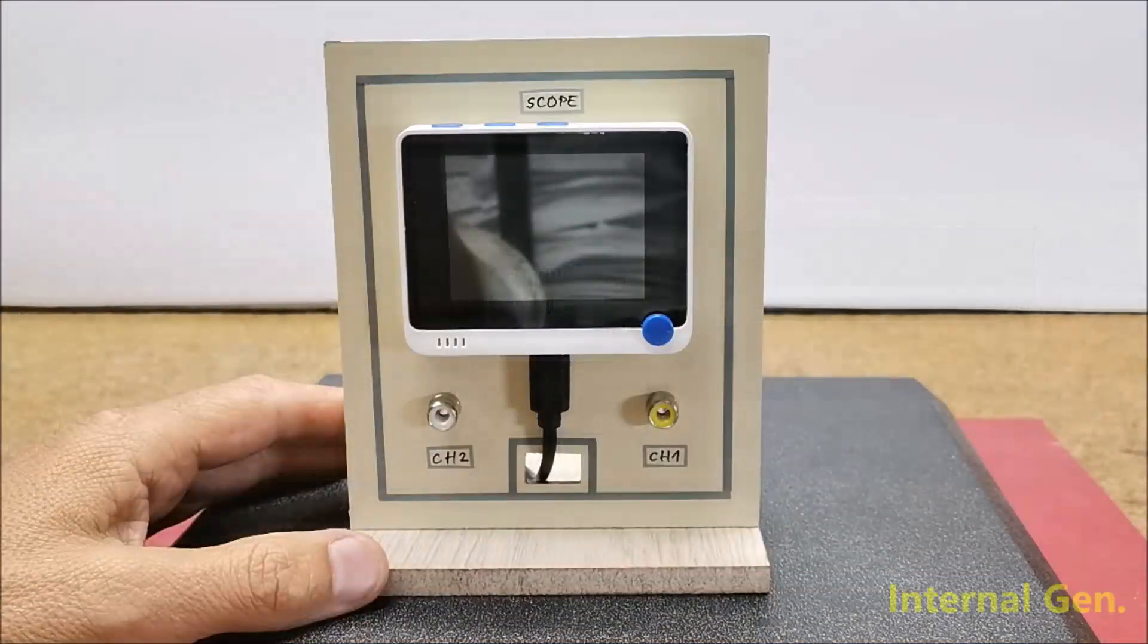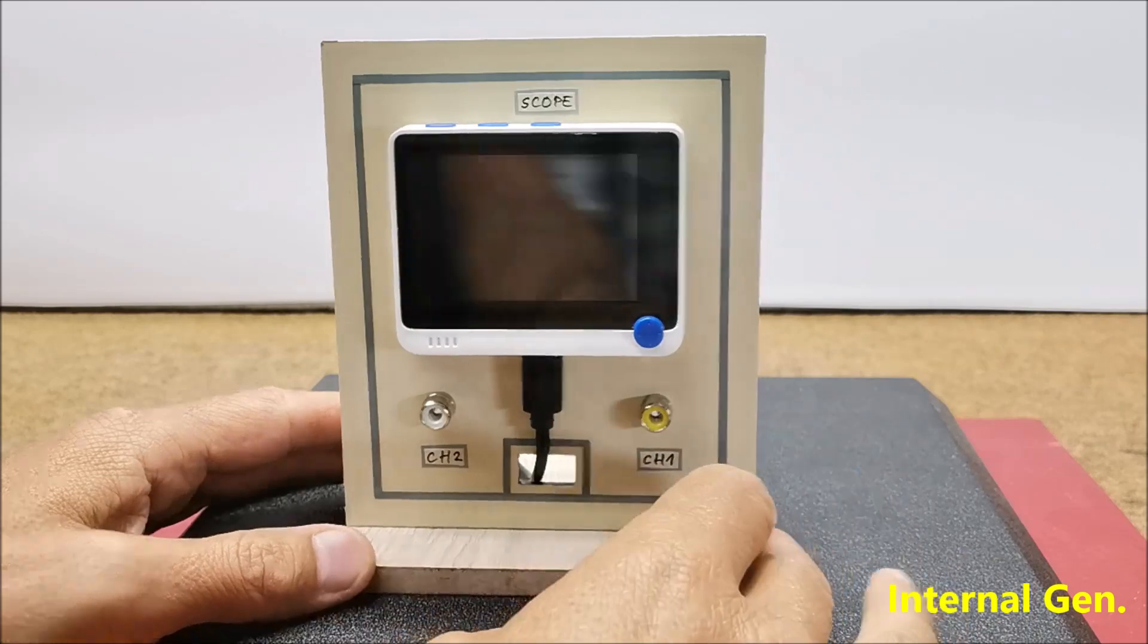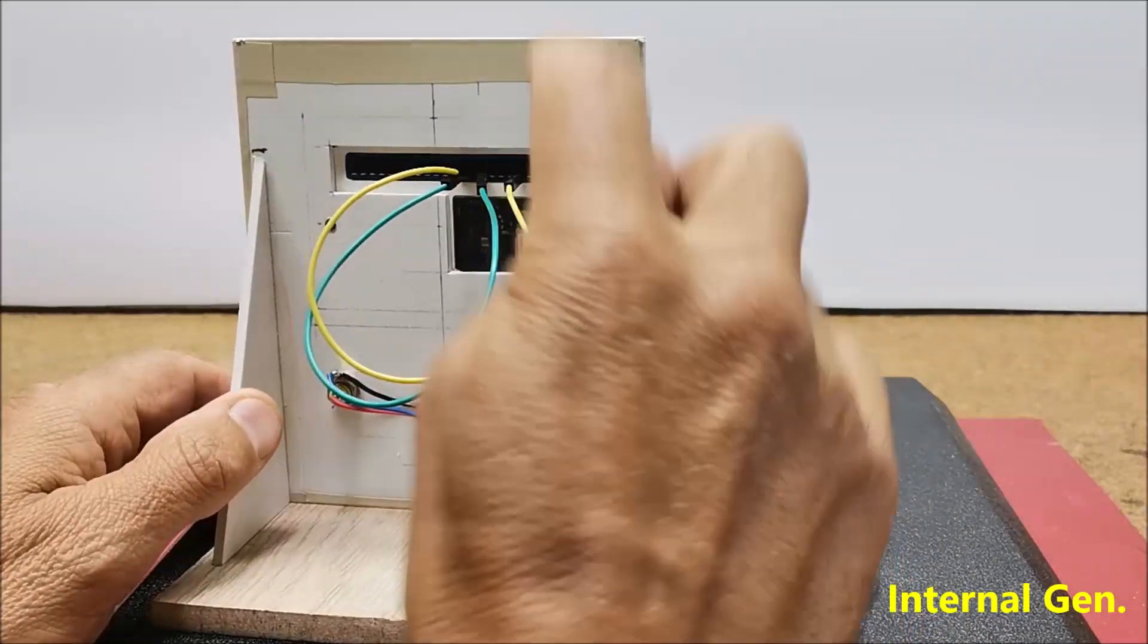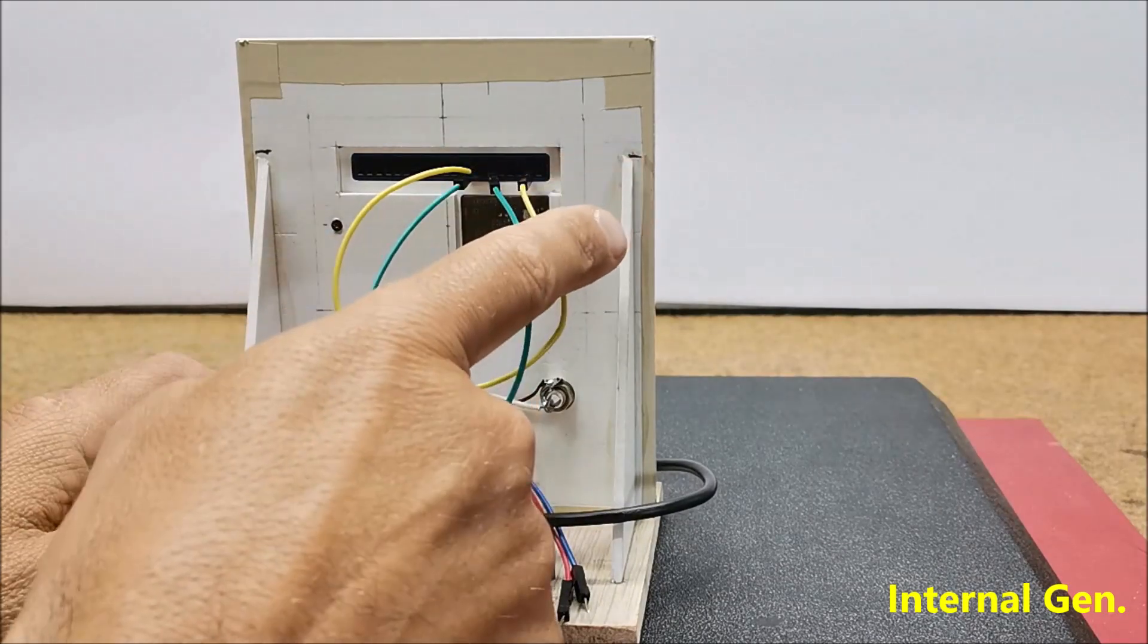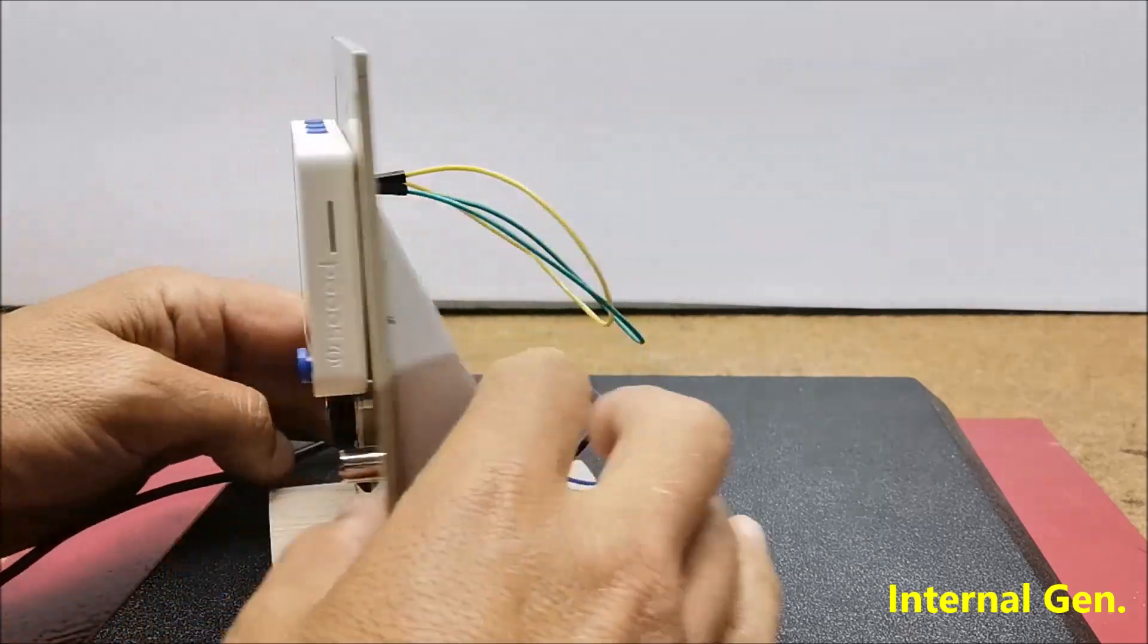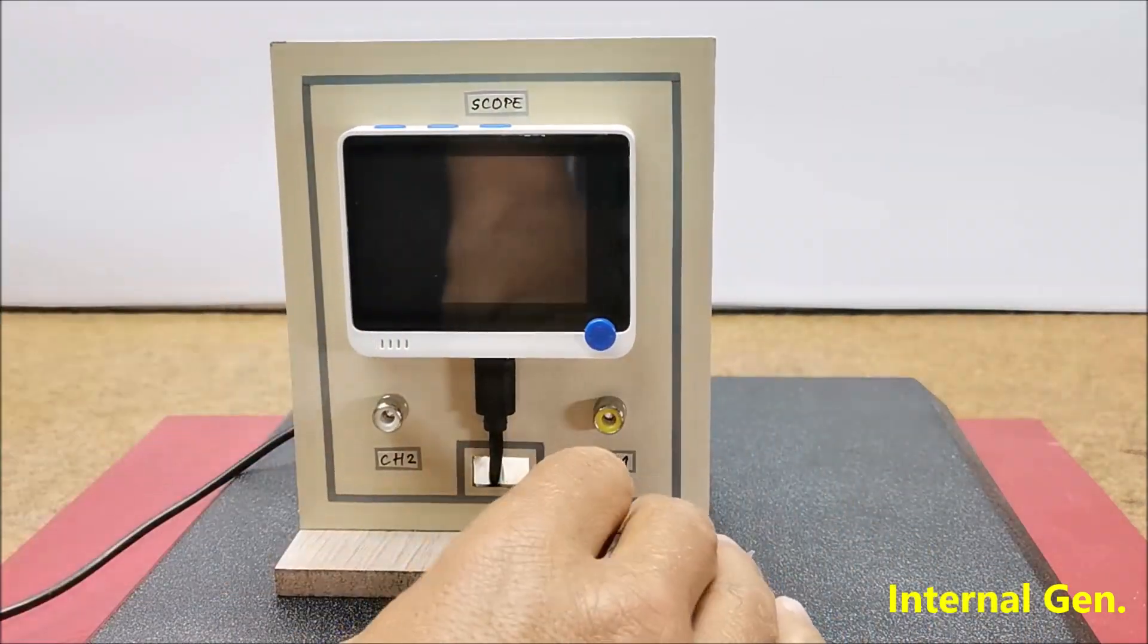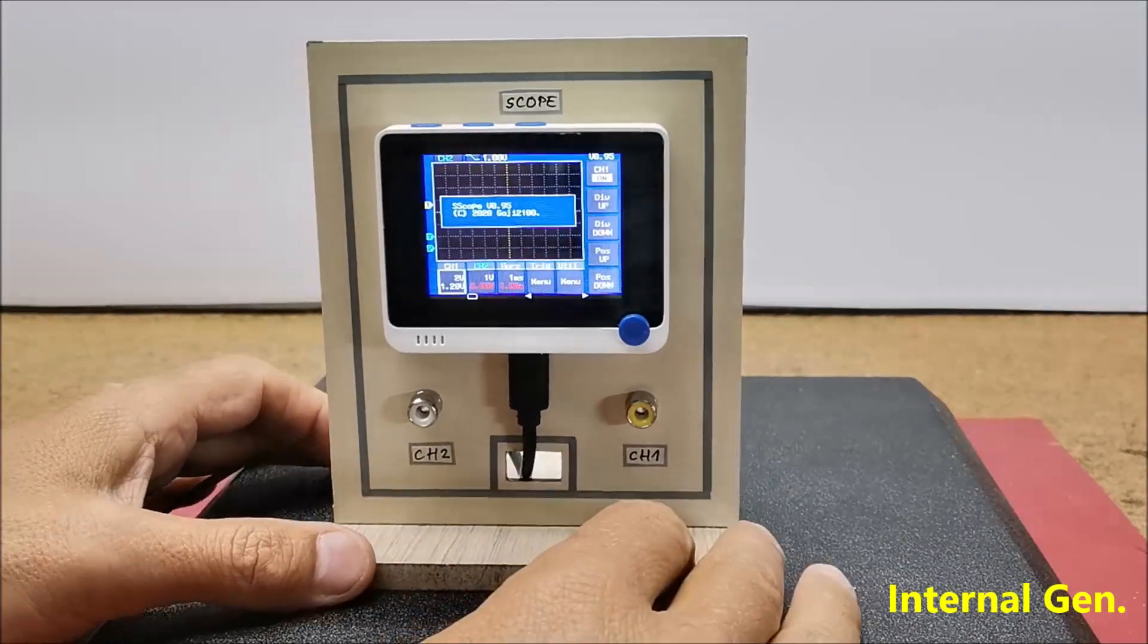The software also contains a source of sine and square signals on pins 3 BCM2 and 11 BCM17, so if we connect the inputs to these pins we get corresponding curves on the screen for both channels without using an external signal source.